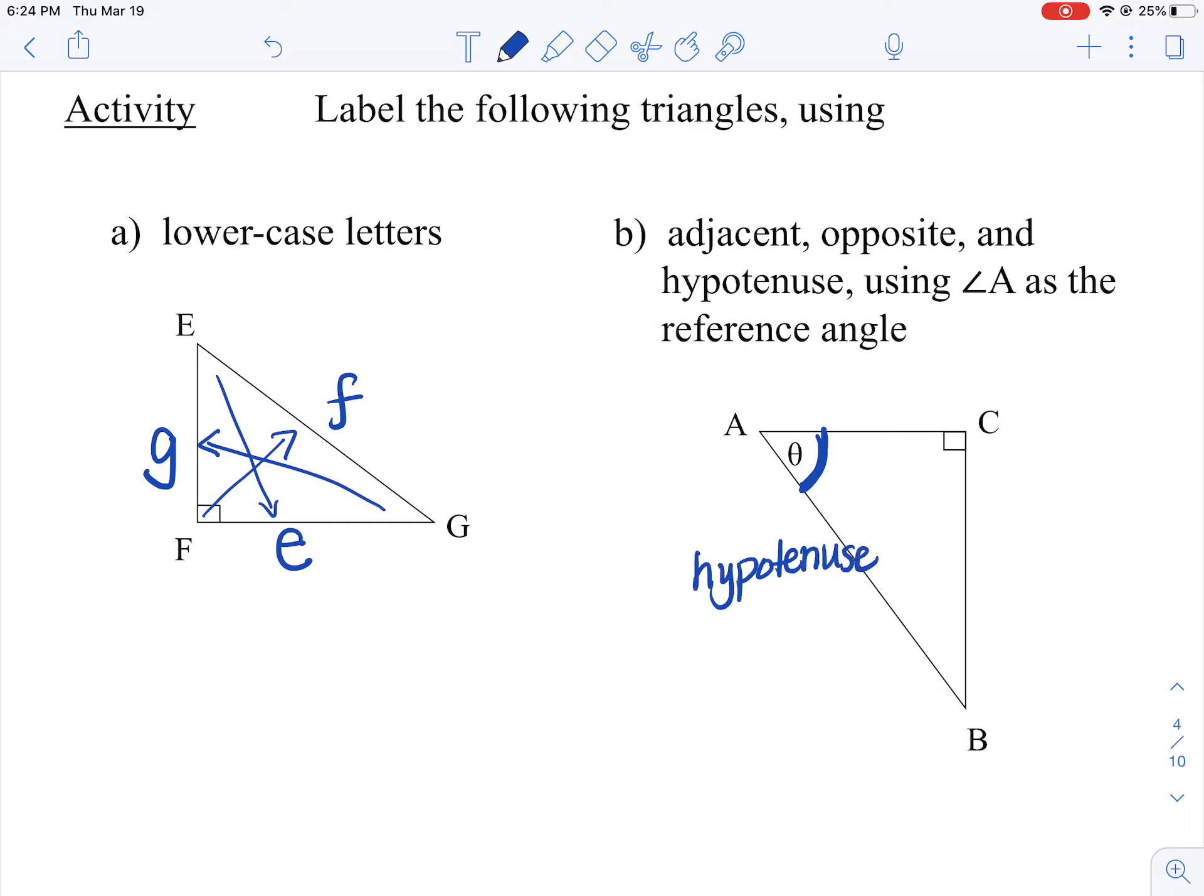And then across angle A will be the opposite. And then the side touching that angle is your adjacent. And that's how we label triangles.